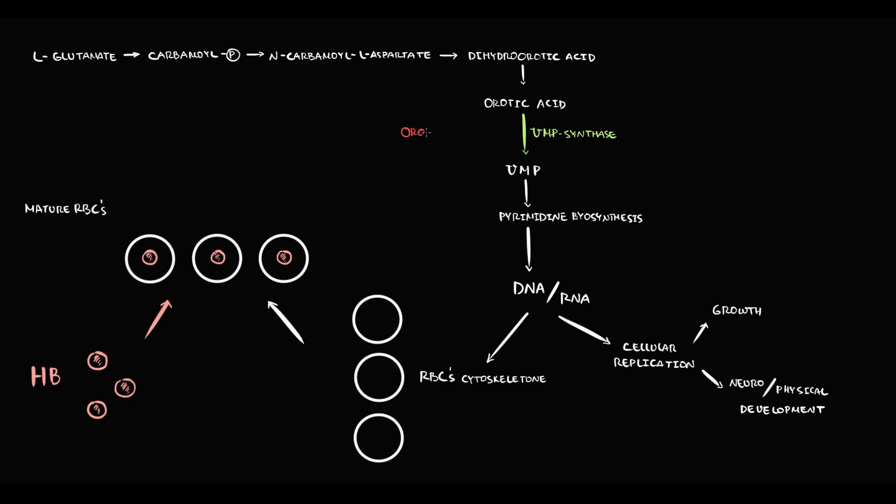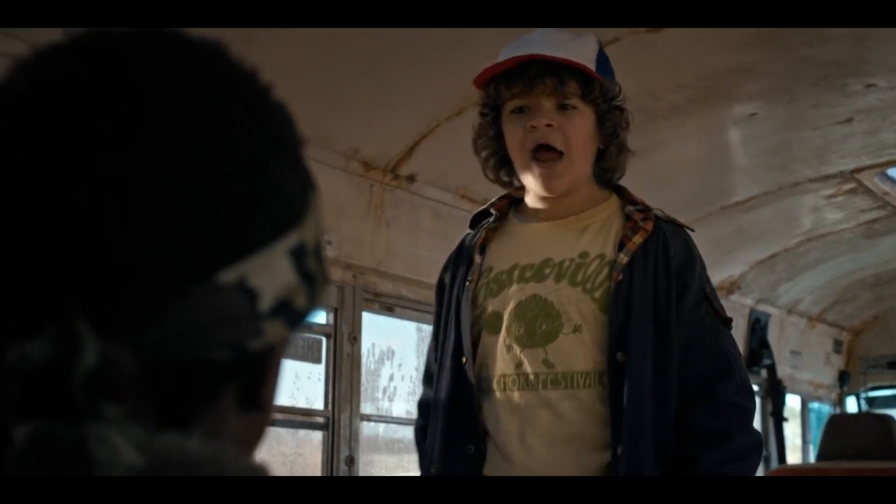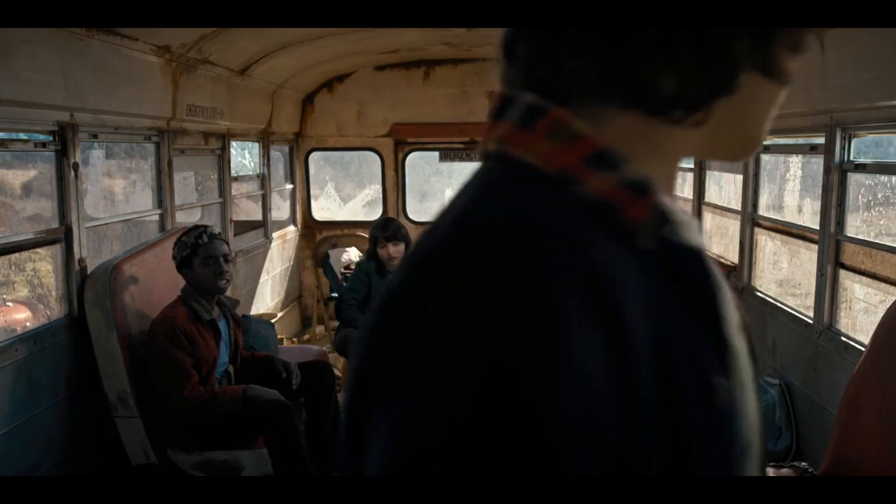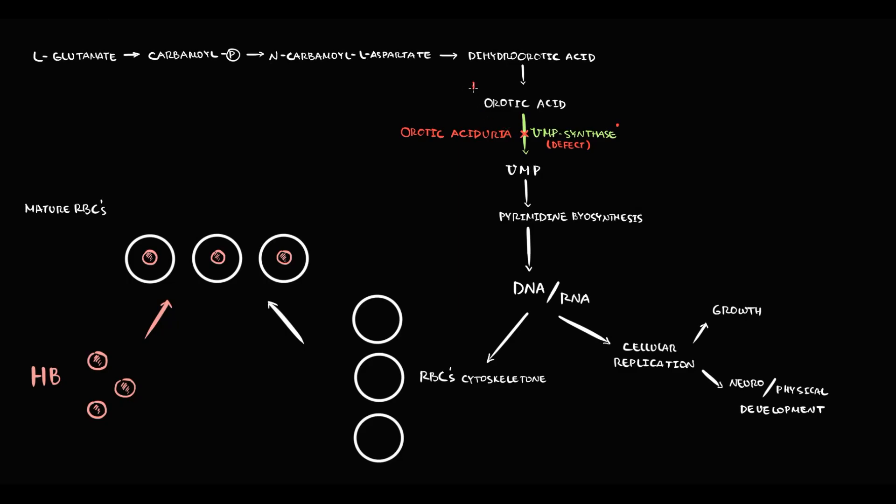But in erotic acid urea, mutation occurs which disrupts the function of UMP synthase. Without UMP synthase, we cannot convert erotic acid to uridine monophosphate. So erotic acid begins to progressively accumulate in the blood. And the only way we can excrete erotic acid from the organism is by urine. So with increasing erotic acid concentration in the urine, we call this erotic acid urea, which is the signature feature of this disease.